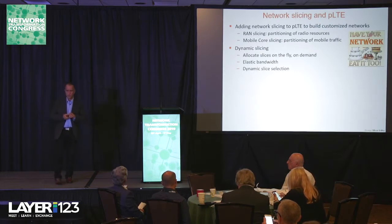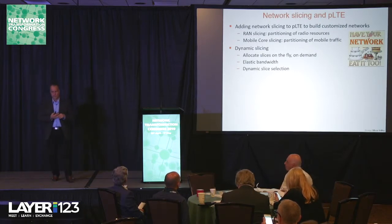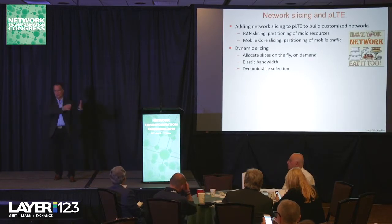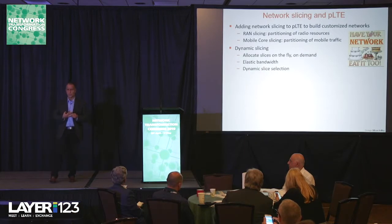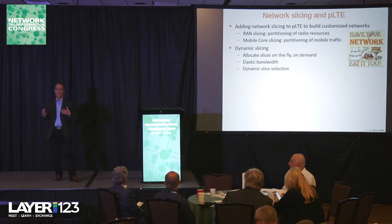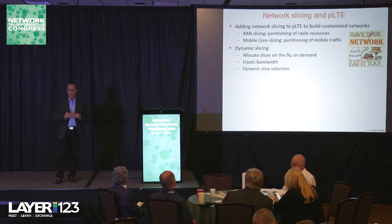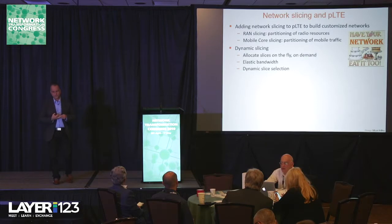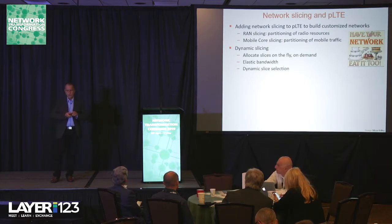Adding slicing to private LTE enables customized networks. Network slicing in 5G — and 4G for that matter — involves two things: RAN slicing, where you partition the radio resources, and mobile core slicing, where you segregate mobile traffic. One thing that attracted our attention is how you can do slicing in a very dynamic way — allocating slices on the fly and on demand, using calendaring to schedule slices like 8 a.m. to 5 p.m., with elastic bandwidth and dynamic slice selection based on user profiles.